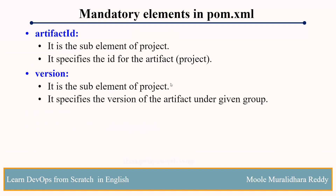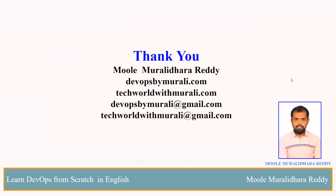These are the mandatory elements — a very important interview question: what are the mandatory fields required in pom.xml? They are: project tag, modelVersion, artifactId, groupId, and version. These five are mandatory. Remaining all are optional and will be added based on use cases — such as dependencies and distribution management. I hope you understand. If you have any questions, feel free to comment and I will try to respond as soon as possible. Thanks for watching this video. We will see you in the next video.